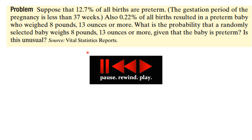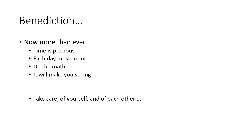Here's another problem to consider. Suppose that 12.7% of all births are preterm — meaning the gestation period is less than 37 weeks. Also, 0.22% of all births resulted in a preterm baby who weighed 8 pounds, 13 ounces or more — that's a pretty heavy baby. What is the probability that a randomly selected baby weighs 8 pounds, 13 ounces or more, given that the baby is preterm? Moreover, is that unusual? We'll see how you do when we go to the next video.